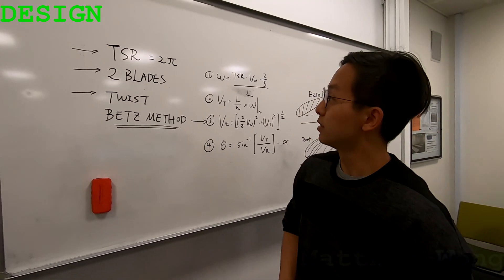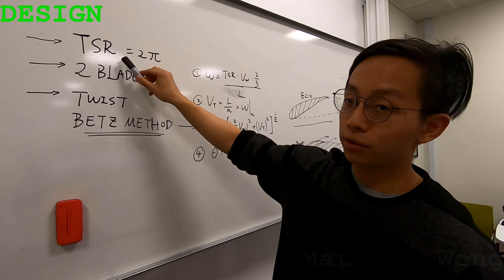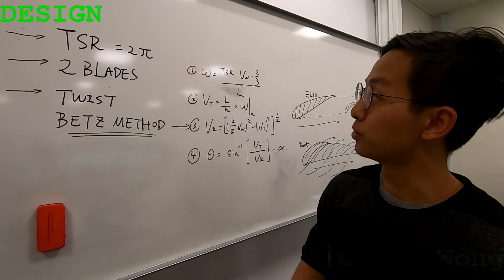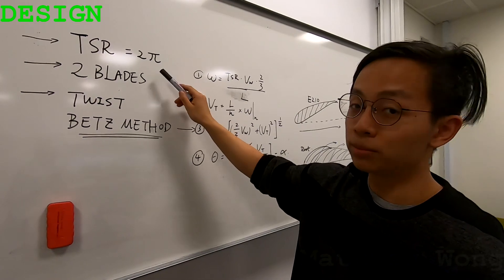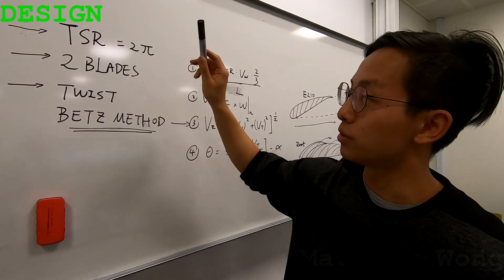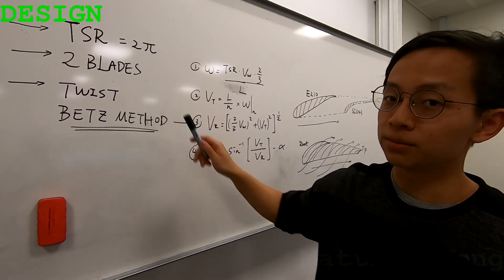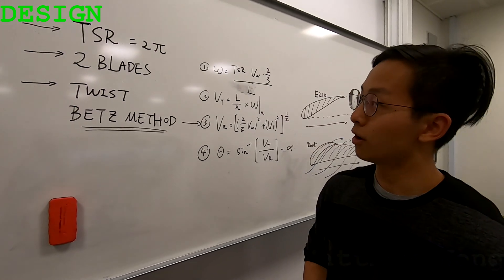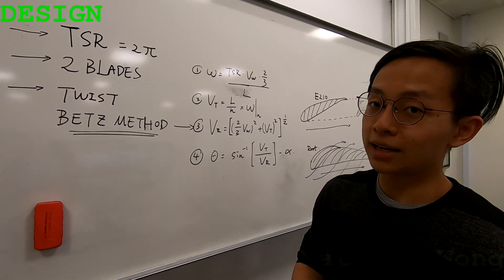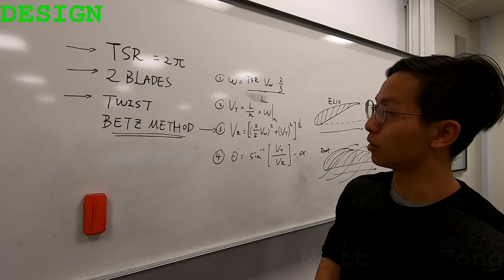So, the overall design of the blade we choose to use a TSR of 2π. This is from our literature research as it shows the TSR of 2π is the optimum for wind turbines. And we decide to use the two blades design with a folding mechanism. This is because there is a constraint of the dimensions. By using a two blade and a folding mechanism we can maximum the amount of volume we can use.